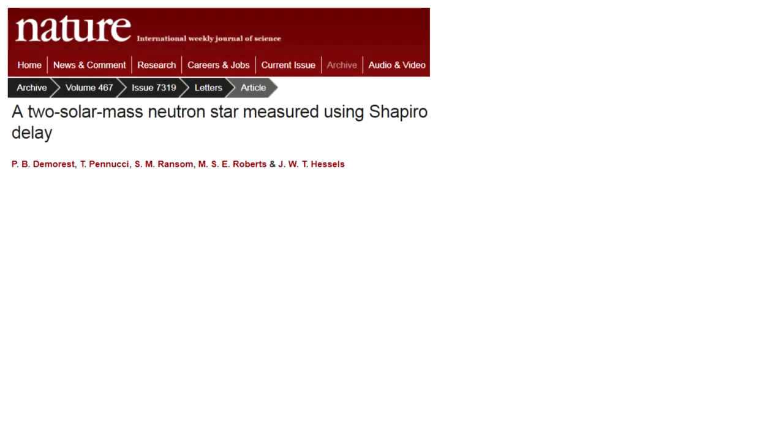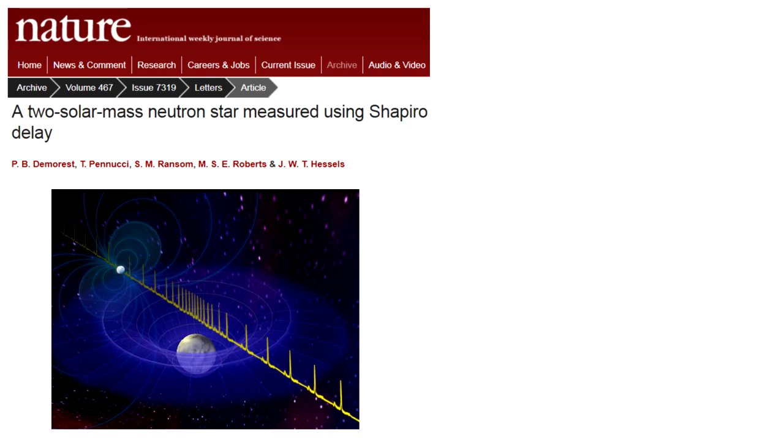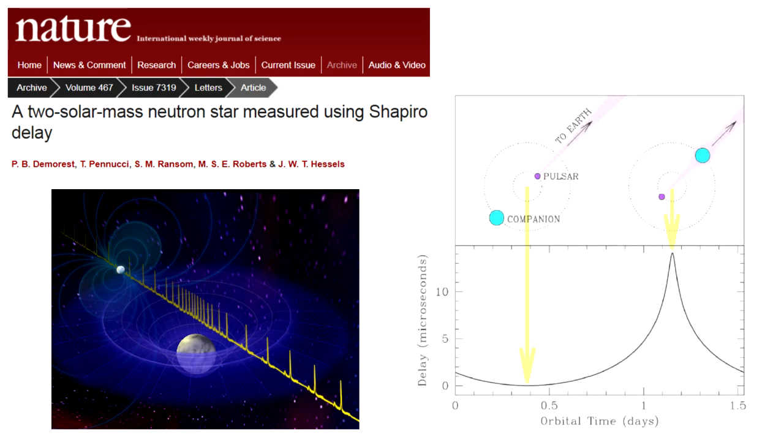More recently, Shapiro delay has been observed in the pulsar radiation of a neutron star orbiting a companion star. Since pulsars emit radiation of a very stable frequency, when this radiation passes by an orbiting companion star on its way to Earth, the added Shapiro delay can be detected and used to calculate physical properties of the solar system.